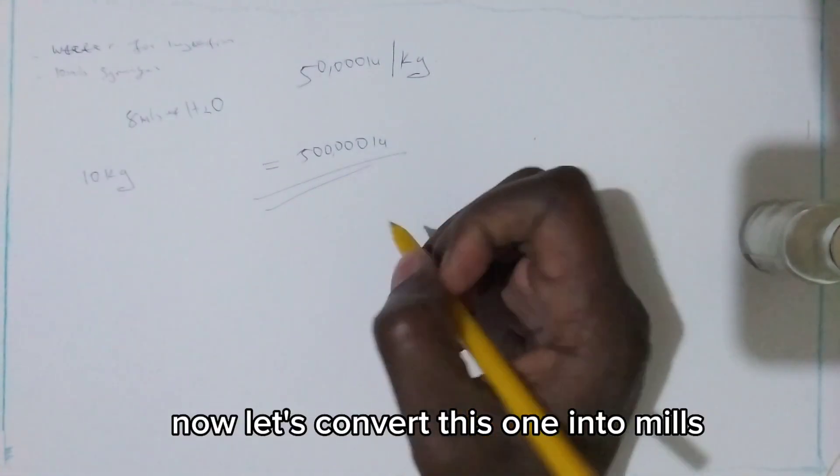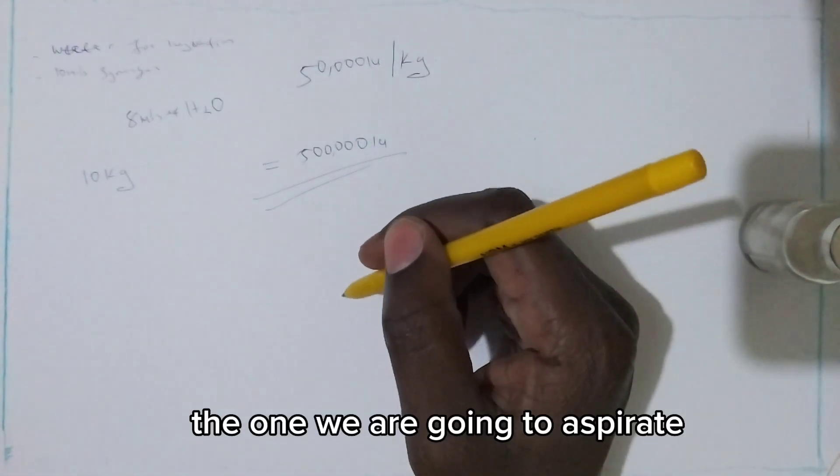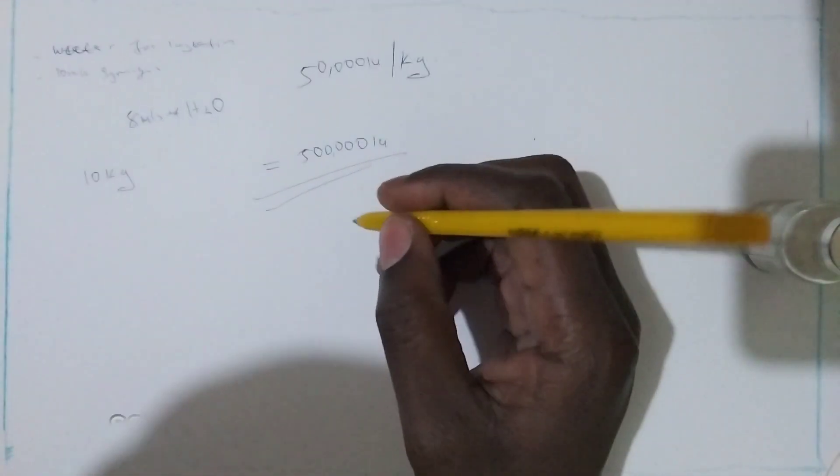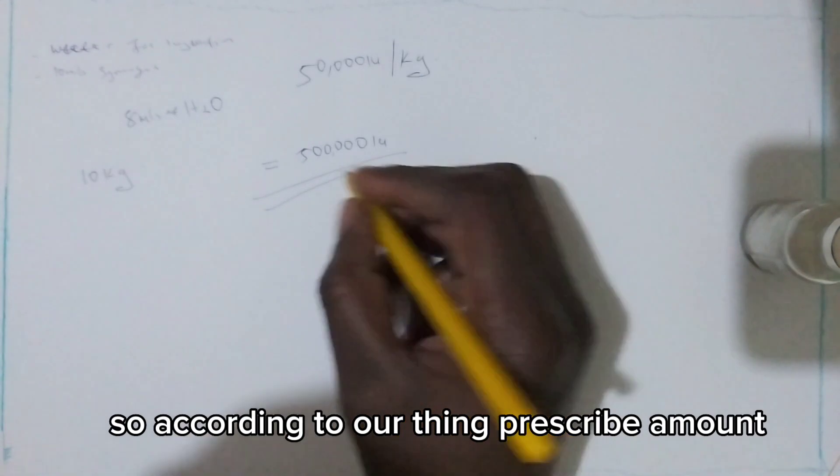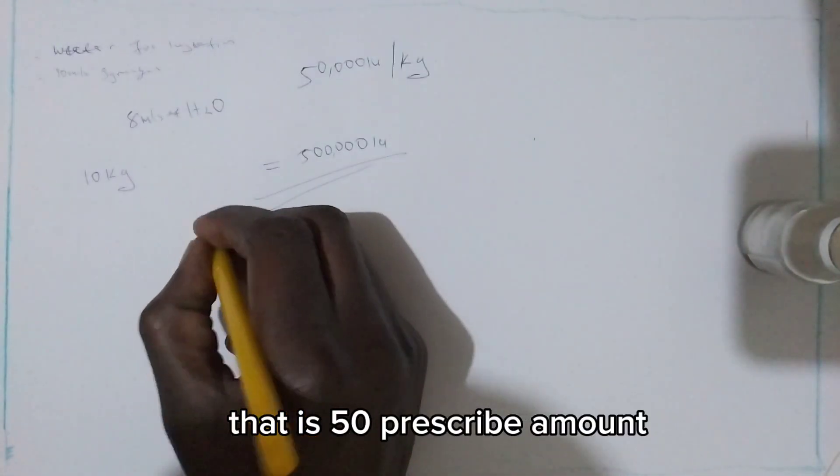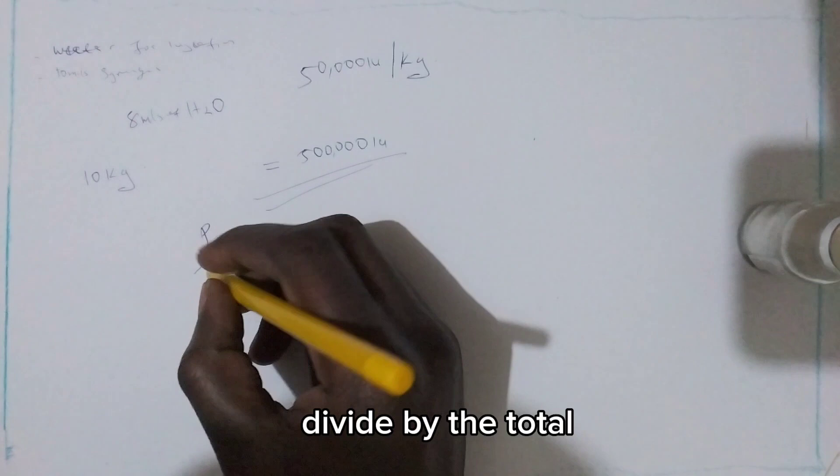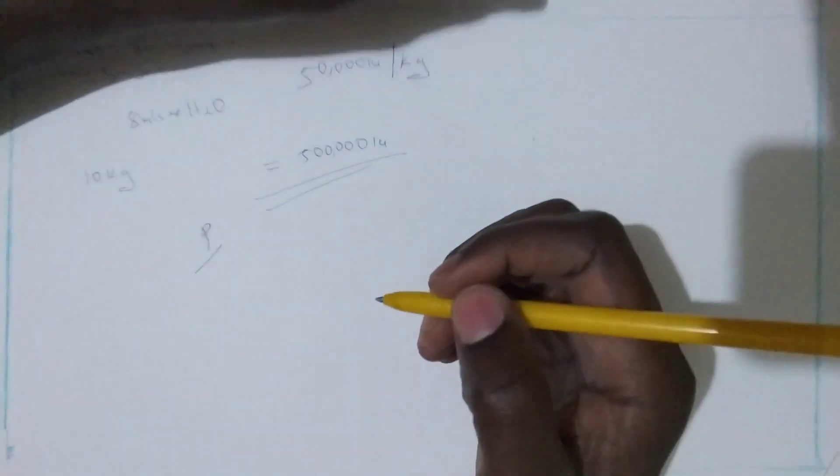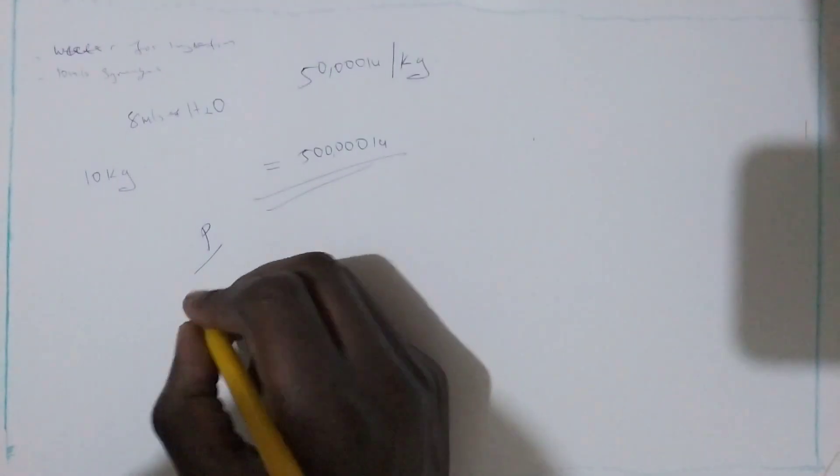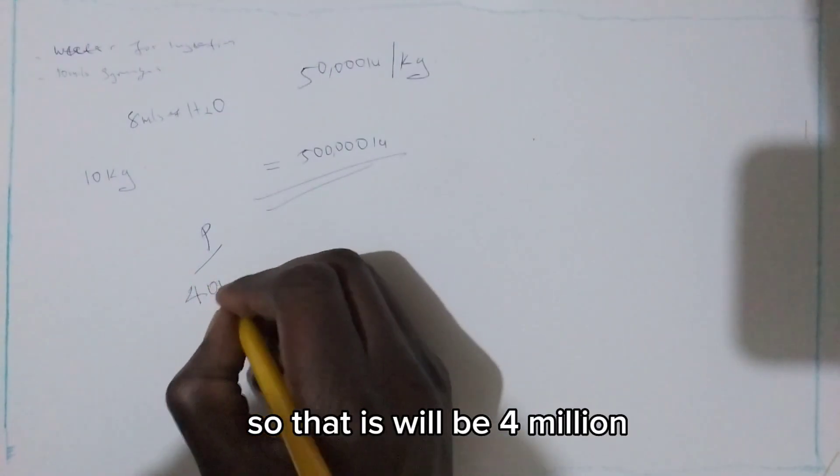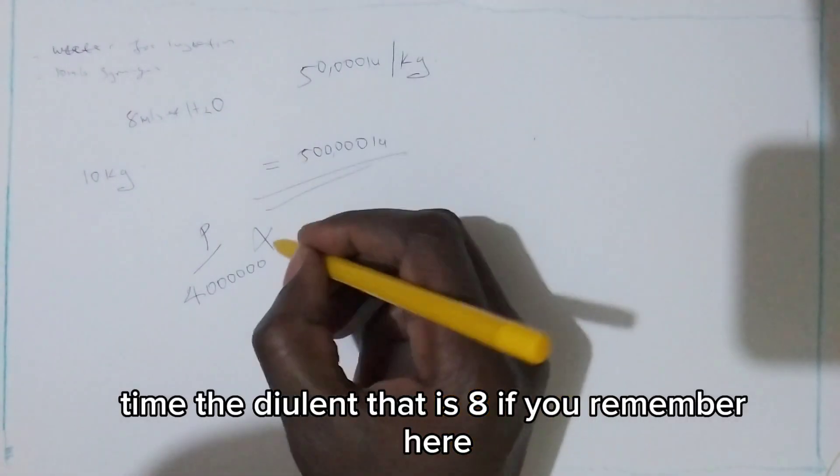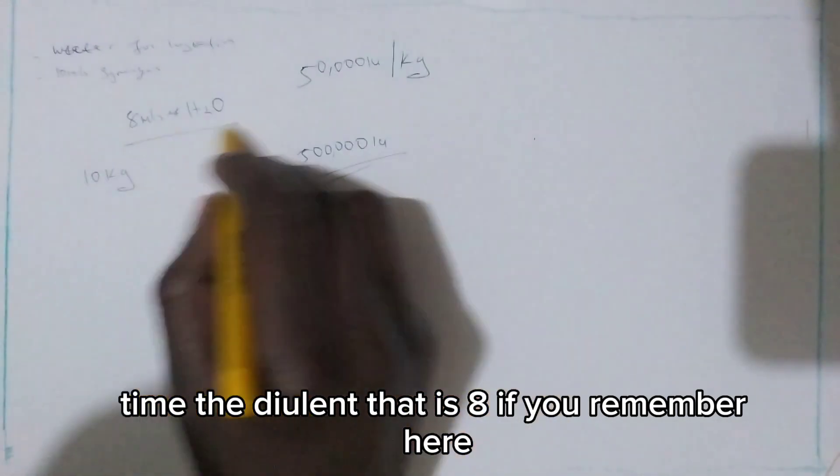Now let's convert this one into mLs, the one we are going to aspirate and give to the baby. According to our formula: prescribed amount divided by the total volume, that is 4 mega units, which is 4 million times the dilution volume, that is 8.